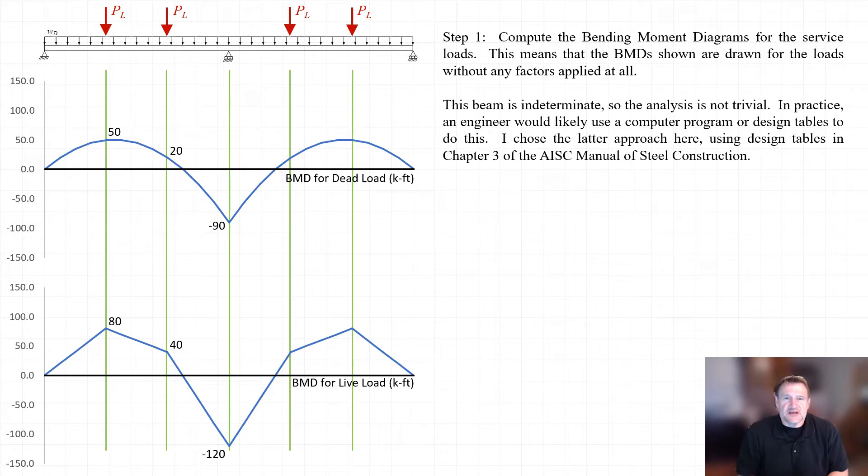You can see here that I have bending moment diagrams for the service dead loads drawn with a maximum positive bending moment of 50 kip-feet and a maximum negative bending moment of 90 kip-feet, as well as bending moments resulting from the application of all four of the service live loads, giving us a maximum positive bending moment of 80 kip-feet and a maximum negative bending moment of 120 kip-feet.